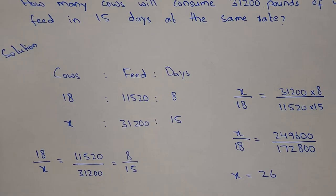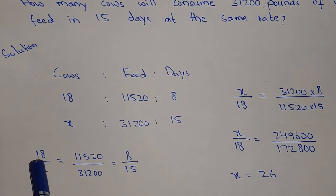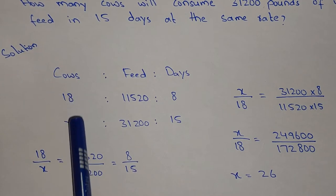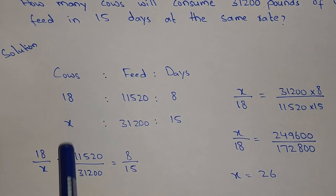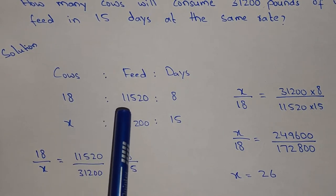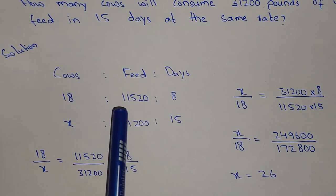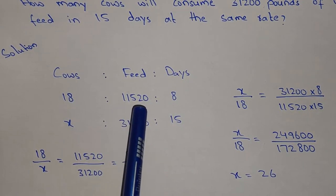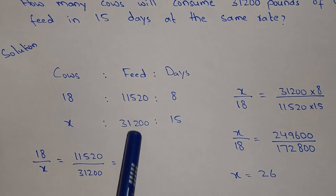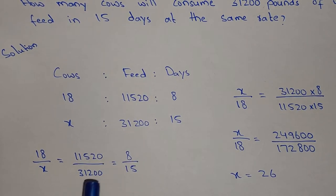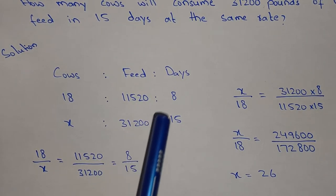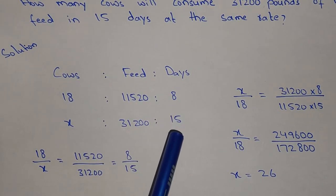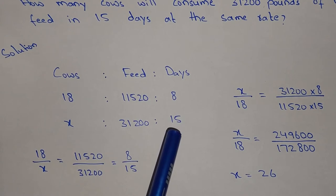So we will simply equate all of these: 18 divided by X equals 11,520 divided by 31,200 equals 8 divided by 15.